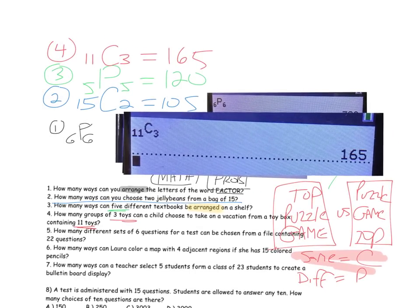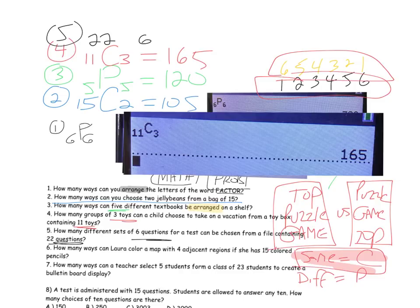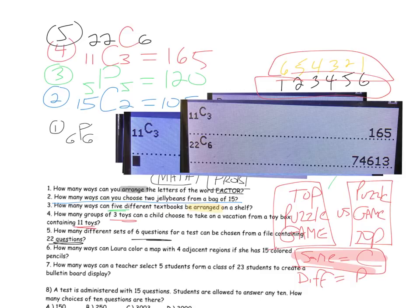Problem five: how many different sets of six questions for a test can be chosen from a file of 22 questions? We have 22 and 6. If the teacher puts questions 1 through 6 on the test, that's the same as questions 6 through 1 — it's still the same six questions for the student whether written forwards or backwards. Order doesn't matter, so it's a combination: 22C6, or 74,613.